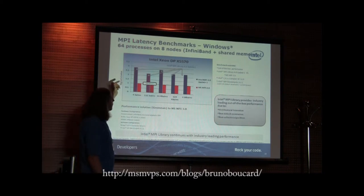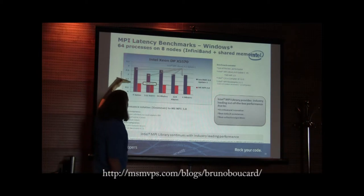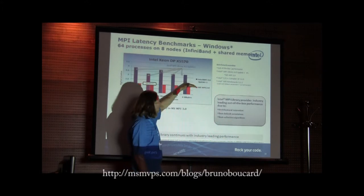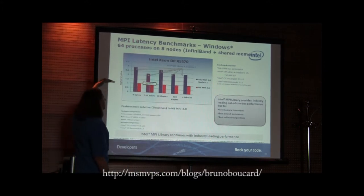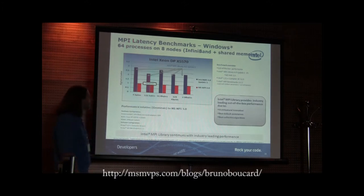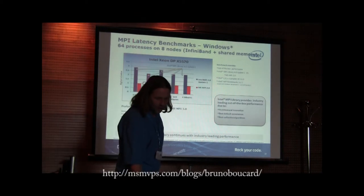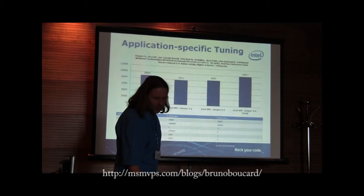Windows HPC Server MPI is based on MPICH 2 with a couple of optimizations and integration into the Windows environment. This defines the default configuration of the system, shown as the red bars. Blue would be if you install Intel MPI on the very same system, recompile, and rerun with the given default parameters.